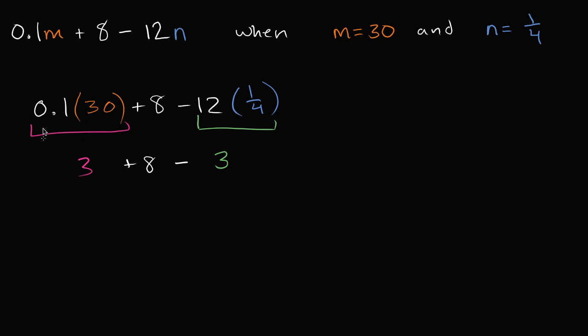And now when we evaluate this, so that is equal to this. We have a 3 plus 8 minus 3. Well, 3's are going to, you have a positive 3 and then you're going to subtract 3. And you're just going to be left with an 8.